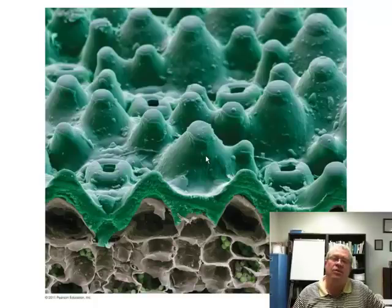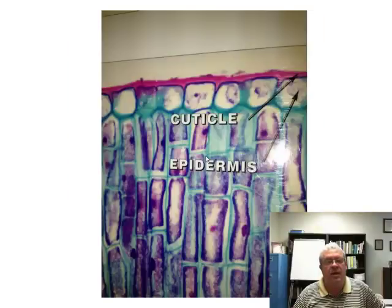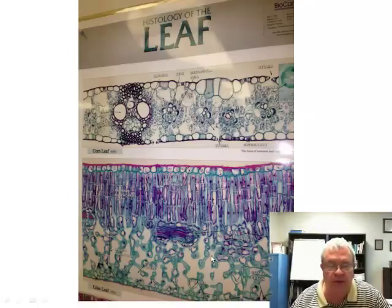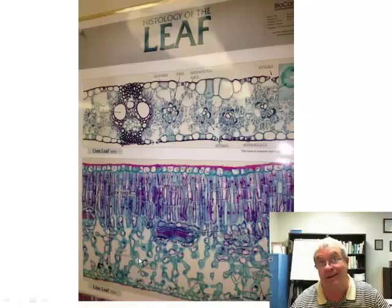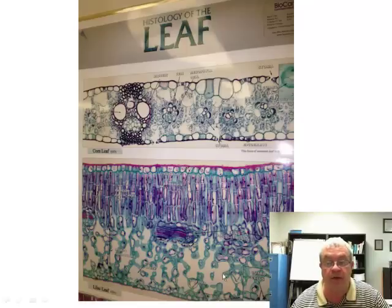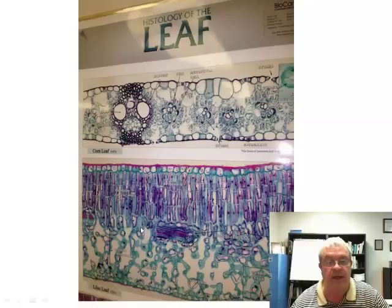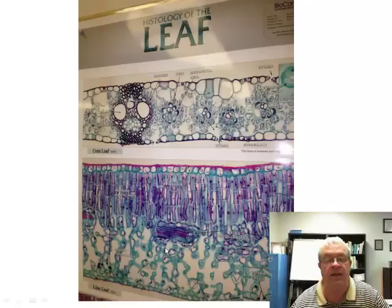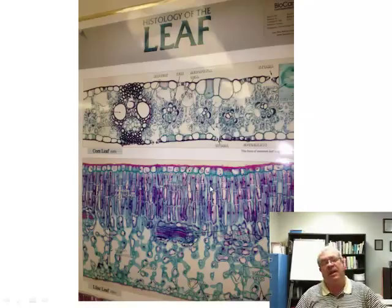So what does that waxy cuticle do for the leaf? It must have something to do with moisture — is it to keep the moisture in or keep it out? Looking back at an earlier slide, there's a lot of empty air space inside the leaf. If you could shrink down small enough to crawl into one of those openings, you would feel like you're in a sauna — close to 100% humidity inside a happy, properly functioning leaf. The cells are saturated, full to the point of bulging with water. So it's very, very wet inside a properly functioning leaf, and the waxy cuticle helps prevent that water loss. That is the defining characteristic of plants: the waxy cuticle on the aerial parts.